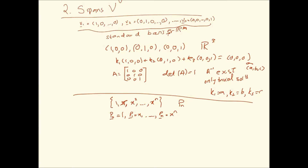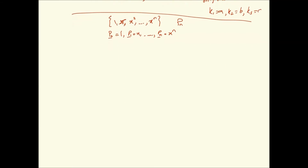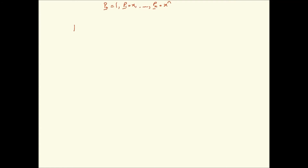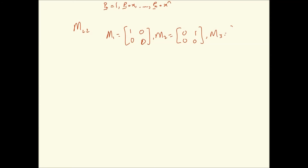The standard basis for the M22 space consists of M1 = [[1,0],[0,0]], M2 = [[0,1],[0,0]], M3 = [[0,0],[1,0]], and M4 = [[0,0],[0,1]]. That is the standard basis for M22, and in a similar manner you can find the standard basis for Mmn.